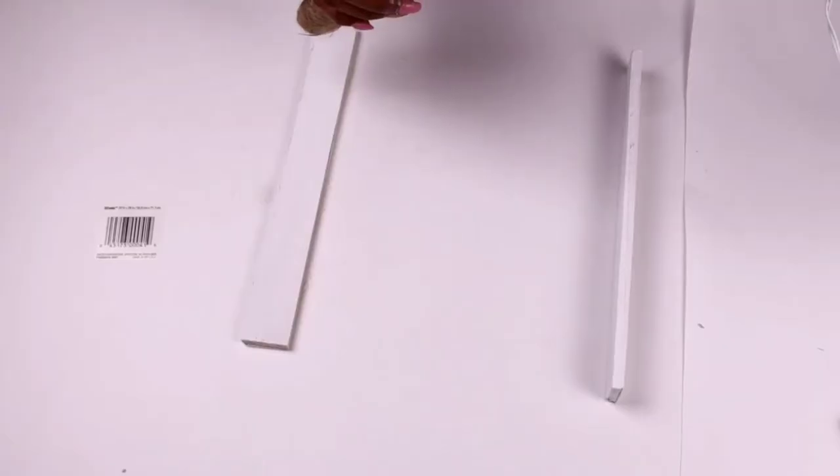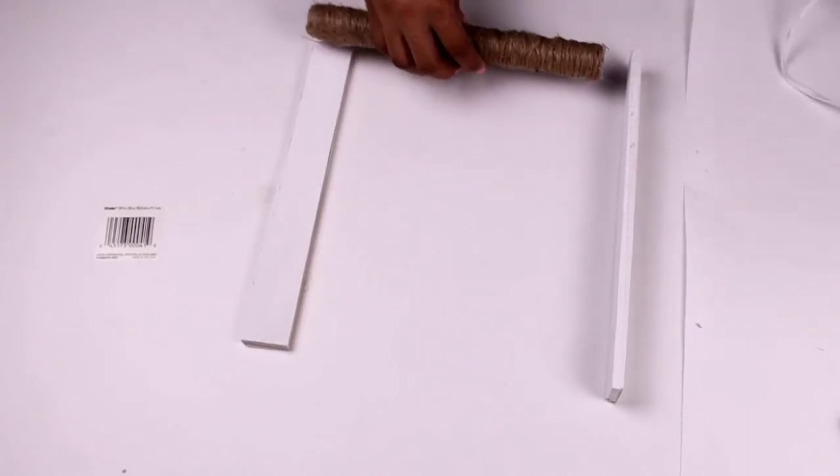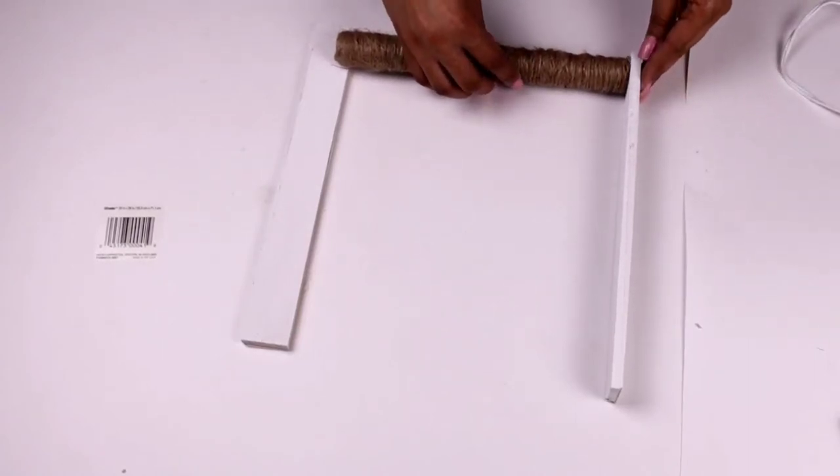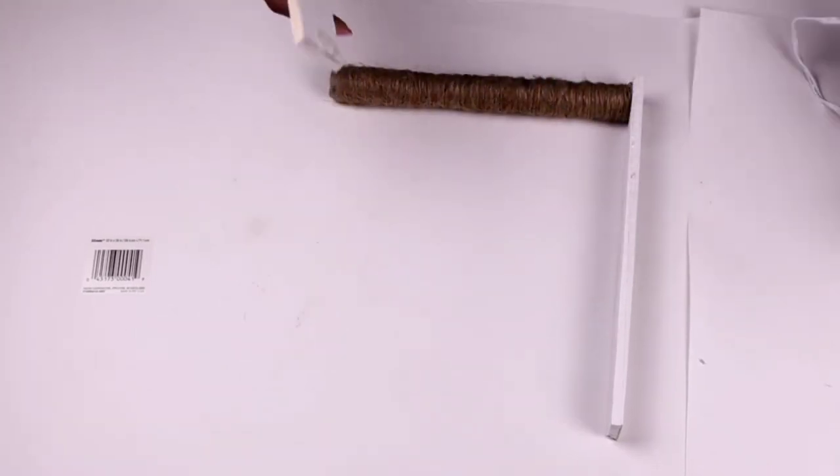So all I do here is line my pieces up on the side and now I'm going to glue my cross piece from boards to boards using hot glue, nothing else.